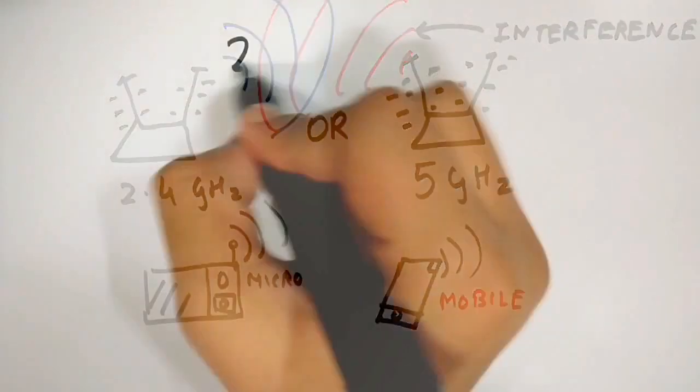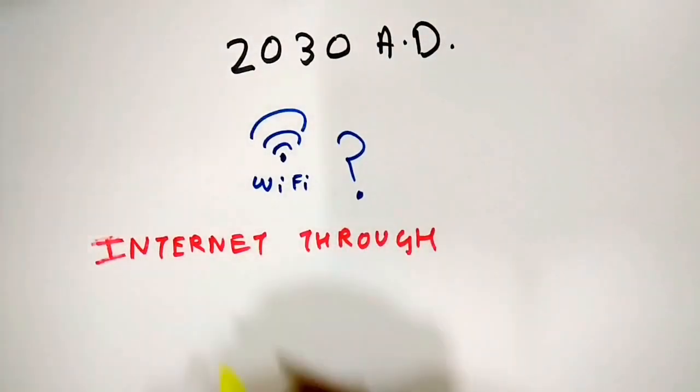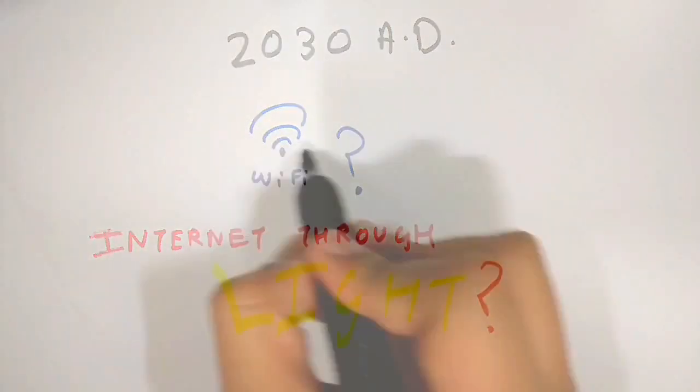So that's how Wi-Fi works. If you want to know what the future of Wi-Fi is and how the data from the internet can be transmitted right through the LED light bulb in your house then subscribe. A new video on that coming soon.